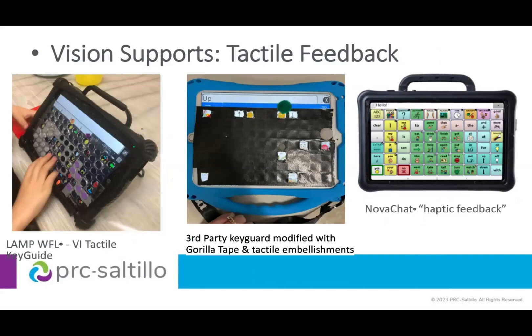When we think about communication, we often forget that those of us who speak with our mouths use a tactile feedback system — how our tongue, lips, and mouth feel when we say a certain word. We develop a tactile landscape in our mouths as we speak. If you've ever had Novocaine and tried to speak, your brain is suddenly lost. So I'm a big advocate for everyone having access to a key guard or touch guide, because as someone learns to communicate with their finger, that key guard begins to build a tactile landscape for their brain and body to refer to as they learn words.